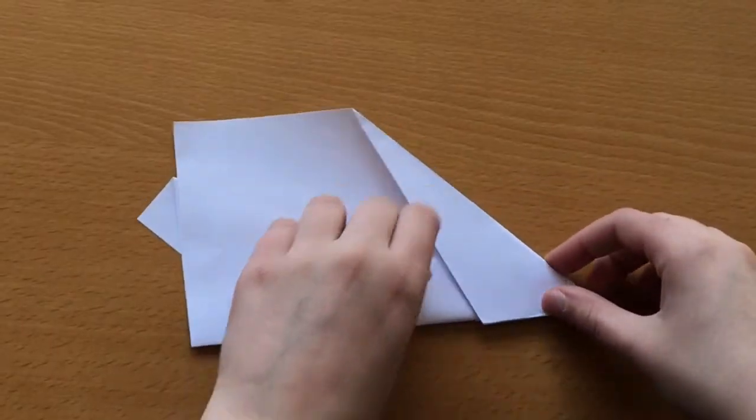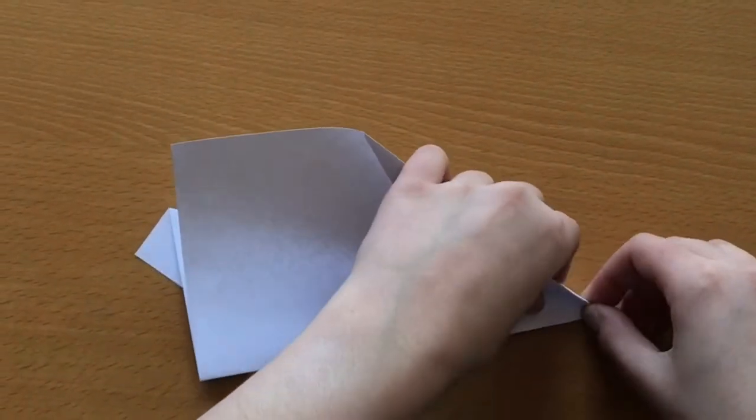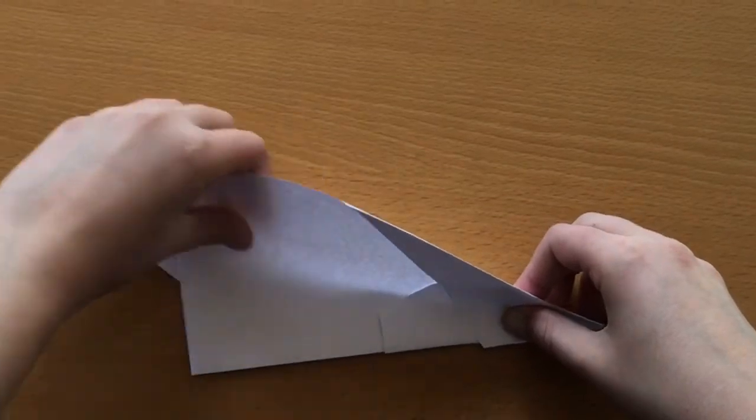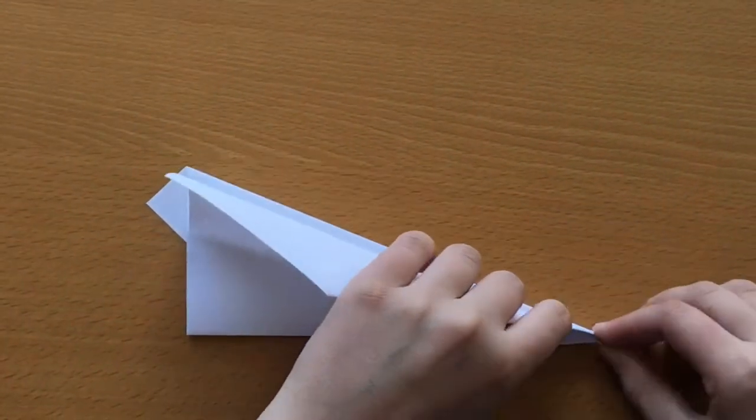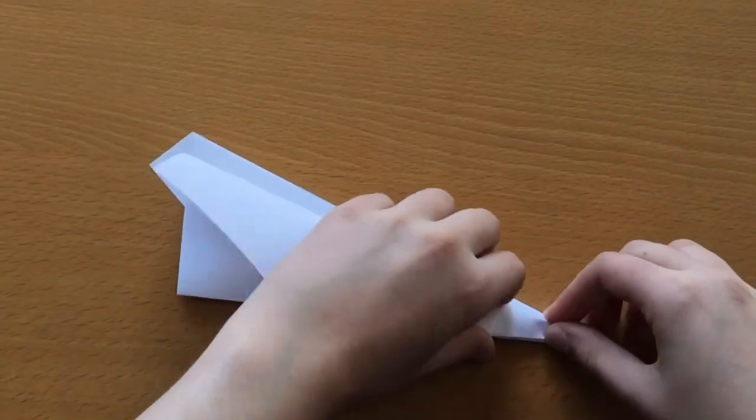Turn it over and fold the second wing down. Again, making sure that it is in line with the paper underneath.